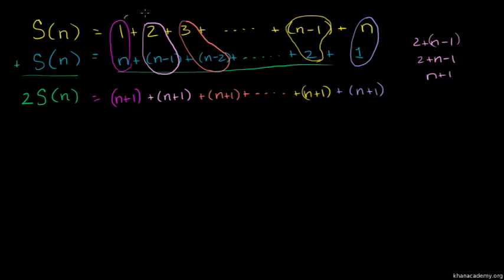When we add all these pairs together, we get 2S(n) equals n times (n plus 1), since we have n terms each equal to n plus 1.